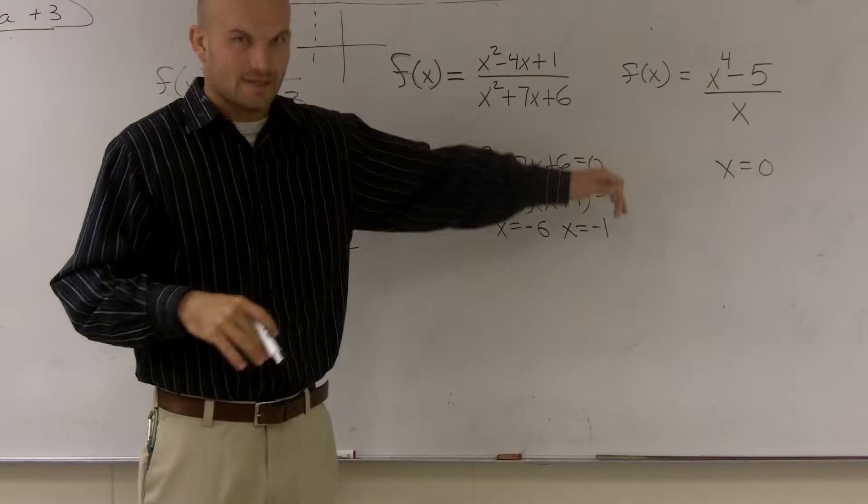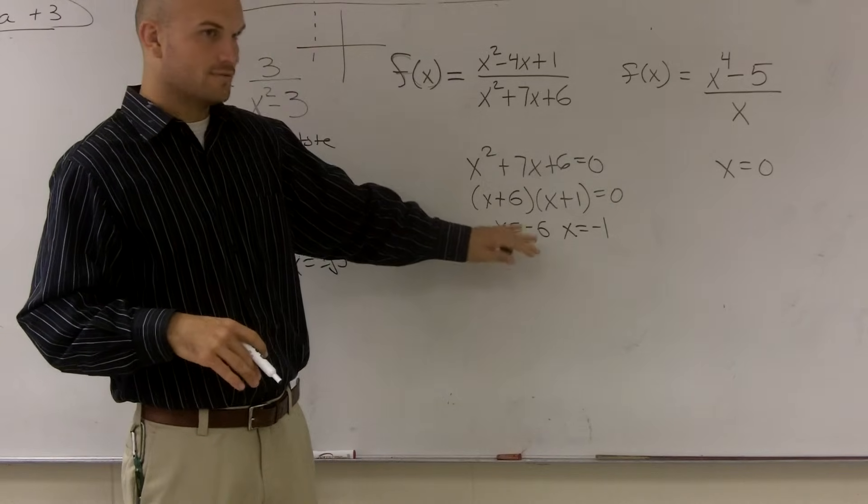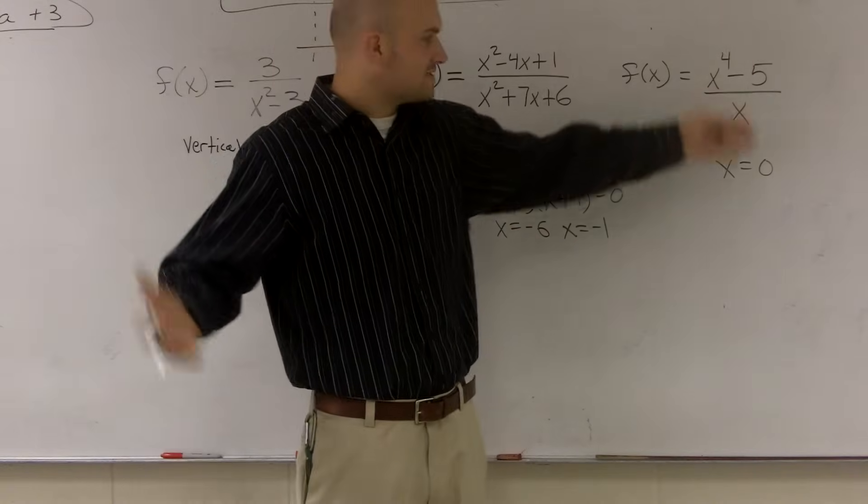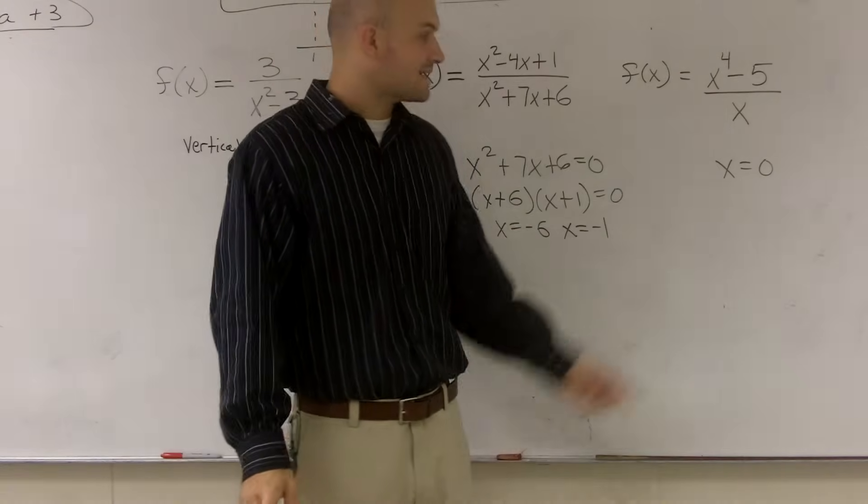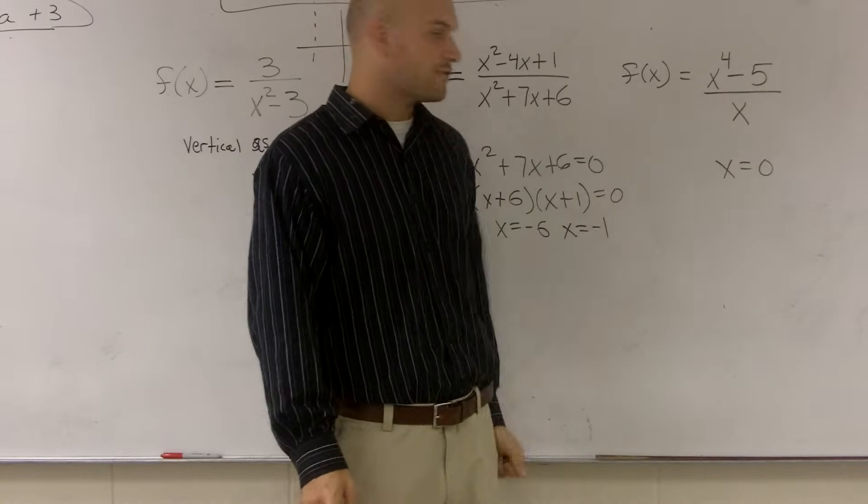I'll just try to make it a little bit quicker. Remember, just set each one of those equal to 0 and then you solve. Here, this one's very easy. I already know that x is 0 as my vertical asymptote.